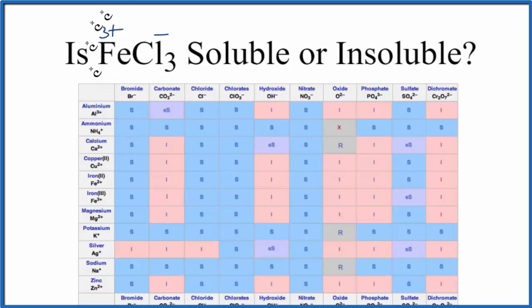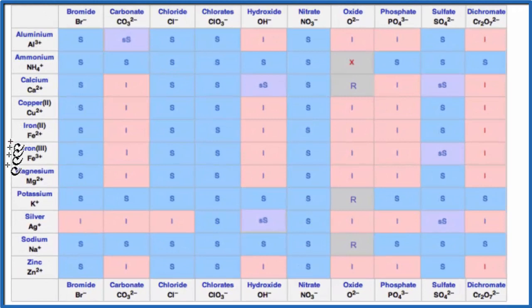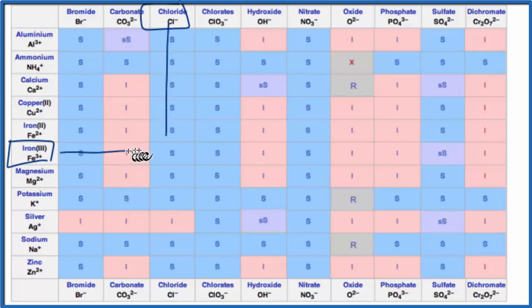We come down and find iron(III) right here, and then we're looking for chloride, which is right here. So we go down, we go over, and that 'S' means that FeCl₃ will be soluble in water—it'll form an aqueous solution.